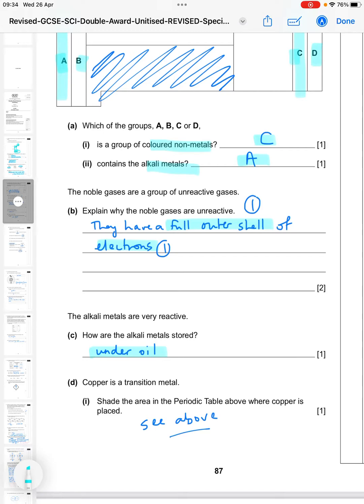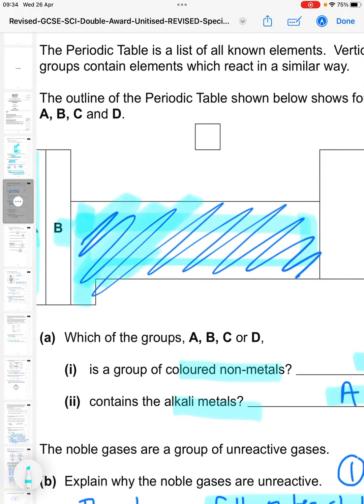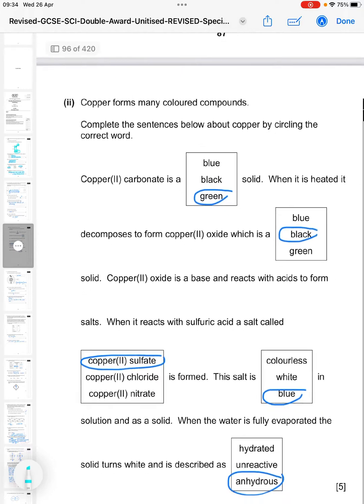So D then, copper is a transition metal. Shade the area in the periodic table above where copper is placed. So the transition metal block is here in the middle, and you can see I shaded it. It's that whole block.